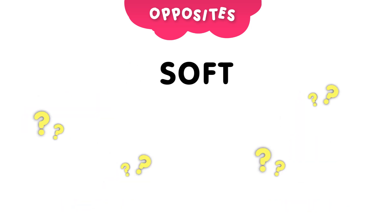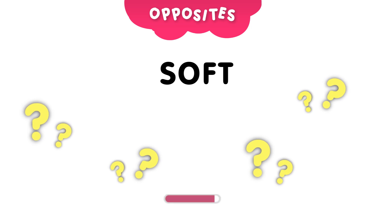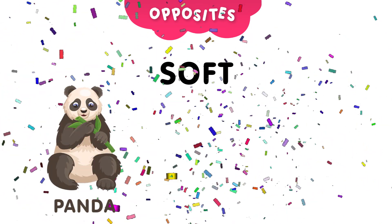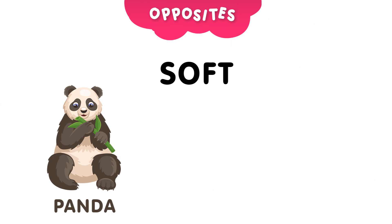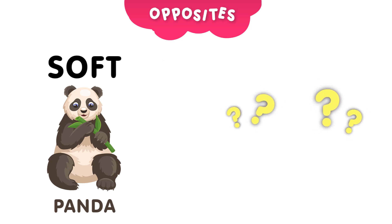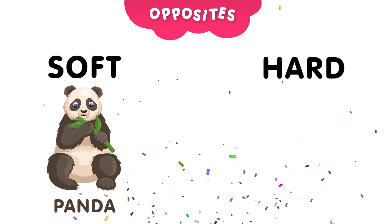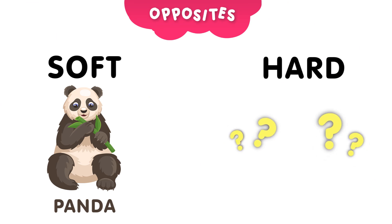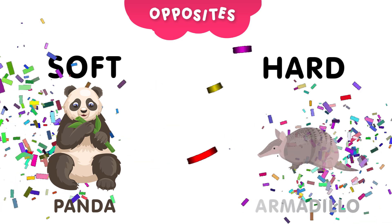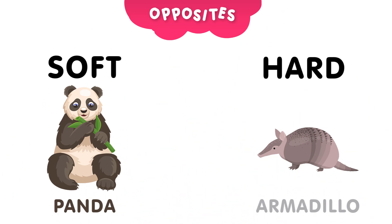Next, we have the word soft. Can you guess which animal has soft fur? The soft animal is the panda. What's the opposite of soft? Can you guess? Take 5 seconds to think about it. The opposite of soft is hard. Can you guess which animal has a hard shell? And the answer is, the armadillo. Armadillos have a hard shell.